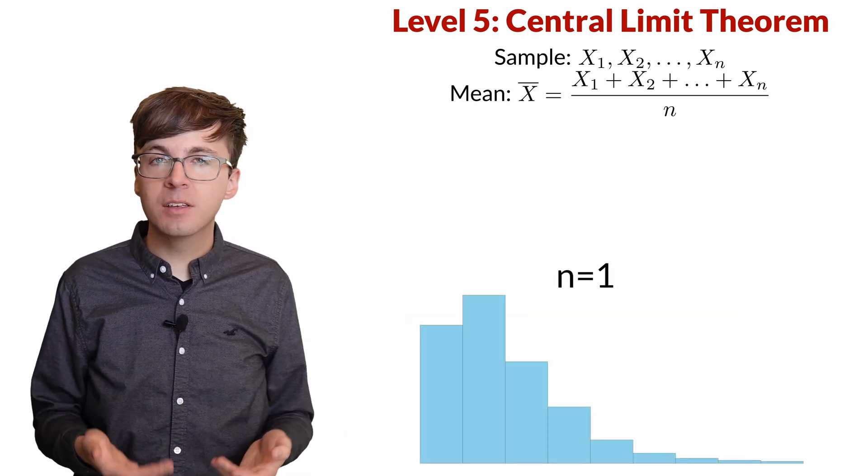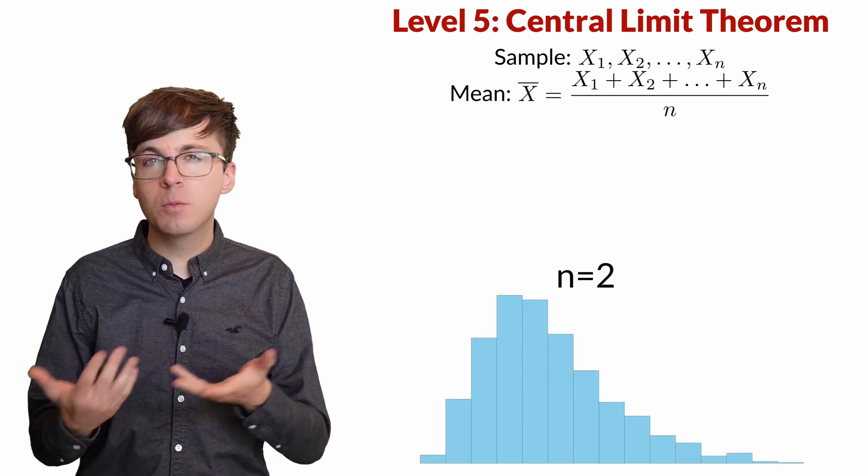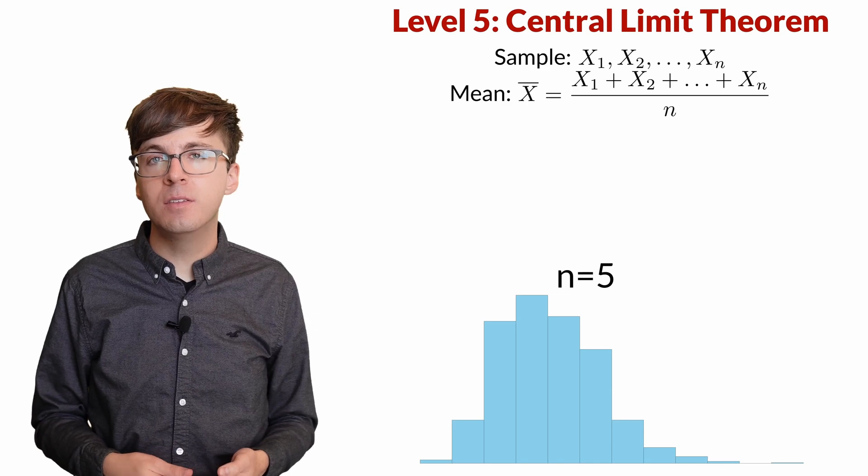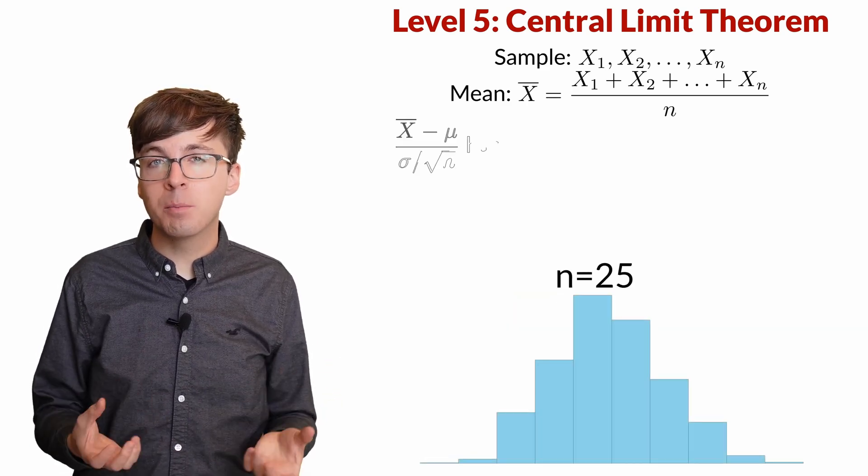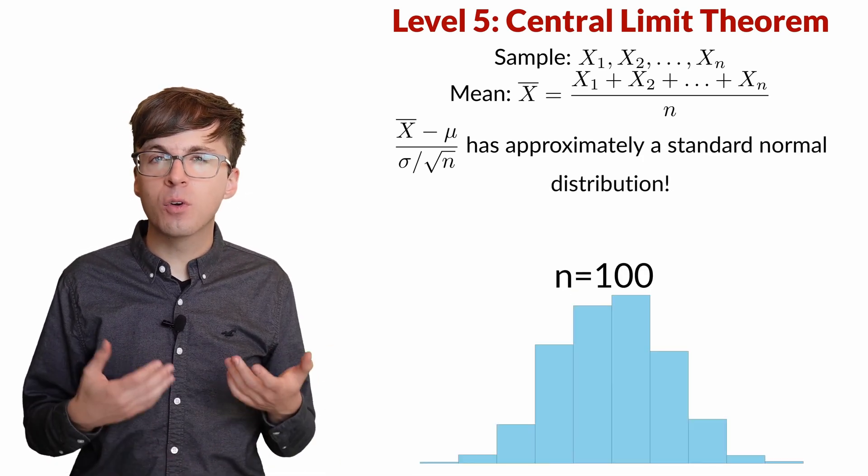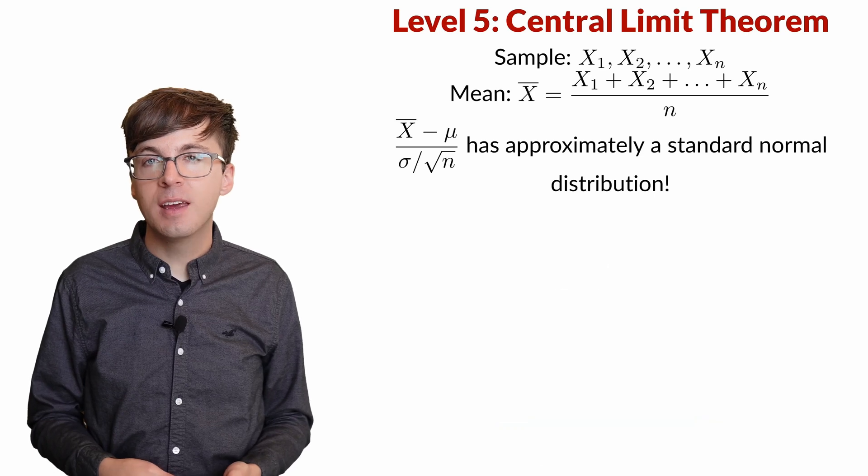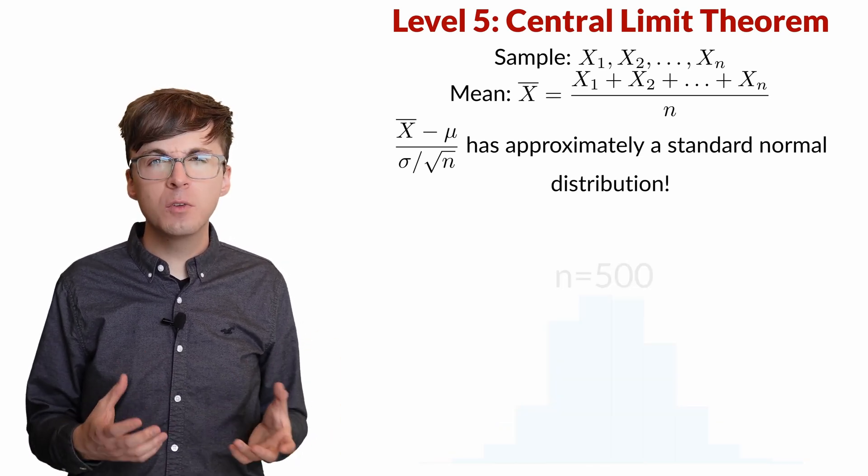Well it turns out, under some mild conditions, if we take the average of a large sample and subtract its mean and divide by standard deviation, we will always approximately have the same bell curve shape. We call this distribution the standard normal or standard Gaussian distribution, and this result is called the central limit theorem. So what are those mild conditions?